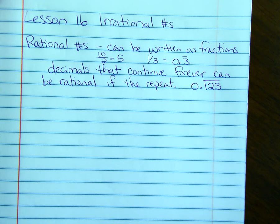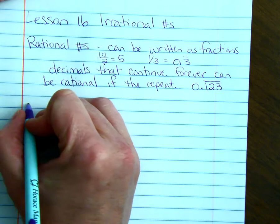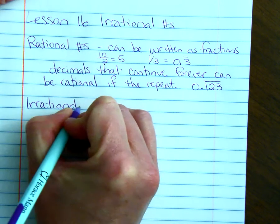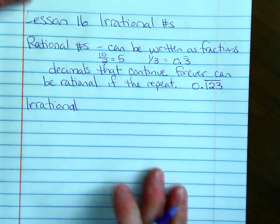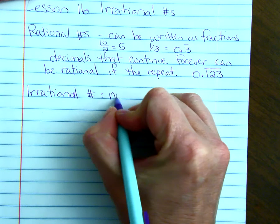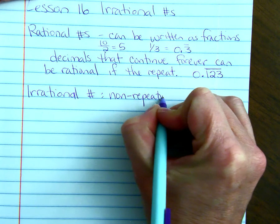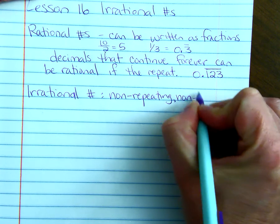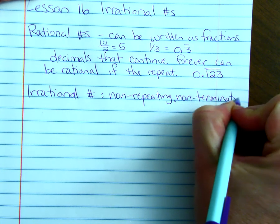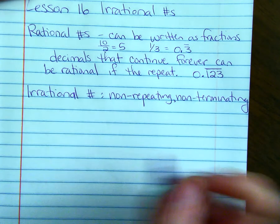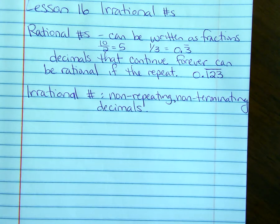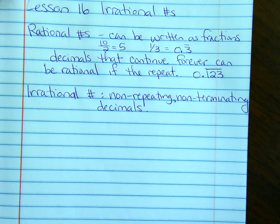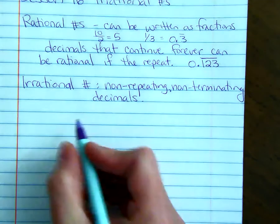If it does not repeat, and it doesn't stop, then it's called irrational. And those ones cannot be written as a fraction. They are non-repeating, non-terminating decimals. Terminating just means that it ends. So, non-terminating would mean that the decimal number just keeps going on and on. There's no pattern. It doesn't start repeating. Those are irrational.